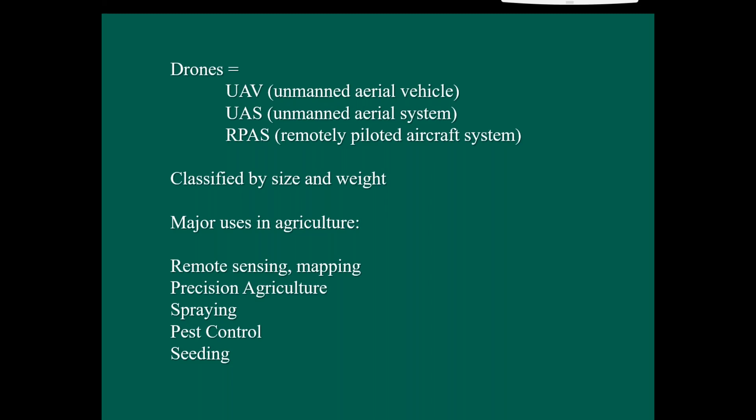So generally they're classified by size and weight. But the major uses in agriculture that we see are remote sensing, whether that data is mapped or not, and then applications in precision agriculture. Also being used for spraying, as we saw, and pest control, and even spreading seeds. But generally the space that we look at, the majority of drone usage is in the space of remote sensing and precision ag.